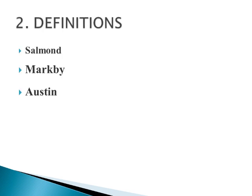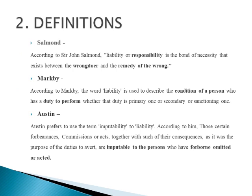We have already discussed the meaning of liability. For exam purposes, I have provided some important definitions of liability given by Salmond, Mark B, and Austin. According to Sir John Salmond, liability or responsibility is the bond of necessity that exists between the wrongdoer and the remedy of the wrong. So according to Salmond, liability is a responsibility — it is the legal responsibility on the wrongdoer to remedy the wrongs he committed.